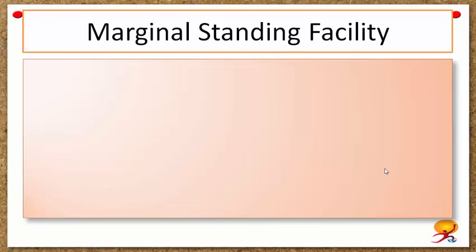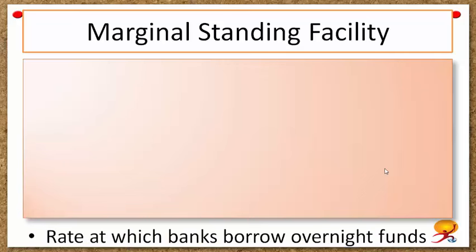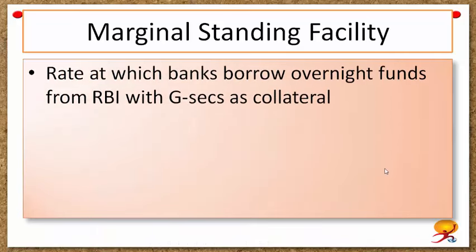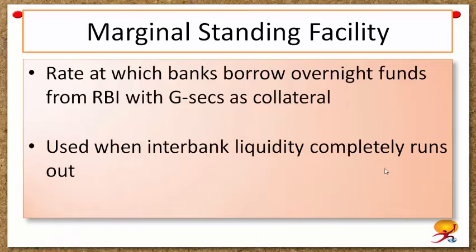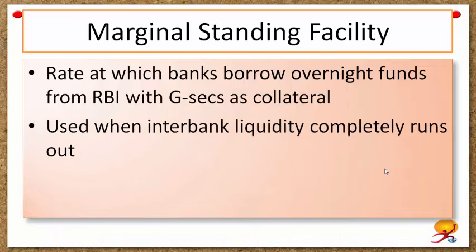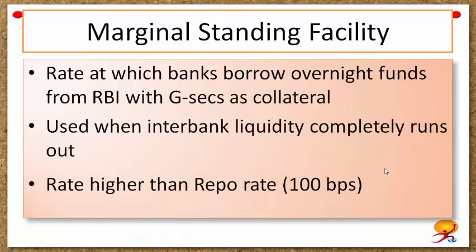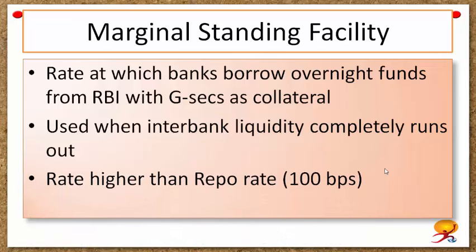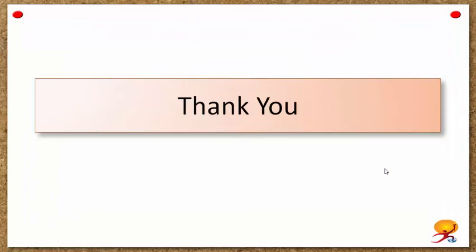Marginal Standing Facility is a new LAF window created by RBI in May 2011. It is used when interbank liquidity completely dries up. MSF is the rate at which banks borrow overnight funds from RBI with government-backed securities as collateral, used when there is great volatility in overnight interest rates. RBI allows banks to pledge government securities and borrow funds at the MSF rate, which is 100 basis points higher than the repo rate, to contain volatility in the system.